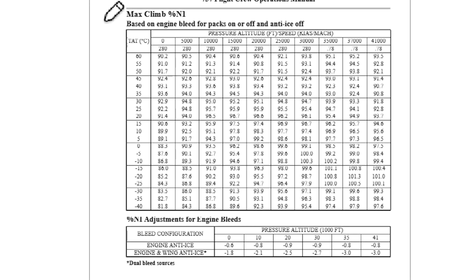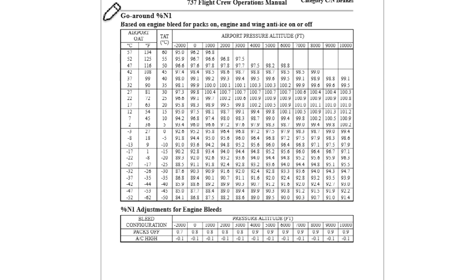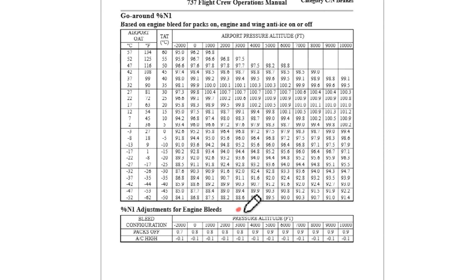We have the max climb percent N1 based on engine bleed for packs on or off and anti-ice off, and we have an N1 percentage adjustment for engine bleeds. We also have the go-around N1 table based on engine bleed for packs on, engine and wing anti-ice on or off, and we have the same adjustments here for engine bleeds.